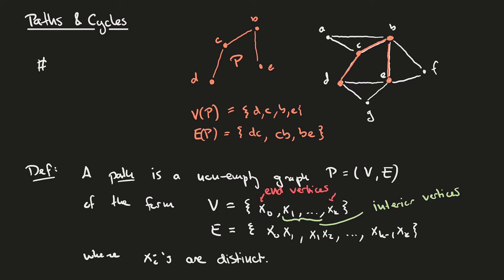Moreover, we call the number of edges in a path its length. This means that in our case, our example path P has length 3 because we have three edges in it. And if we have a path of length k, then we denote the path by Pk.